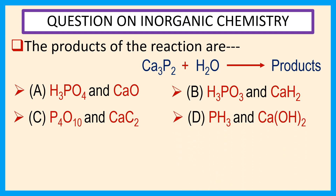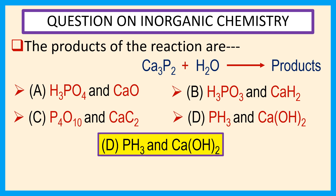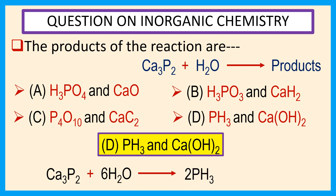The answer is D. PH3 means phosphine and Ca(OH)2 means calcium hydroxide. The complete balanced equation of this reaction is Ca3P2 plus 6H2O to give 2PH3 plus 3Ca(OH)2. Thank you for watching this video.